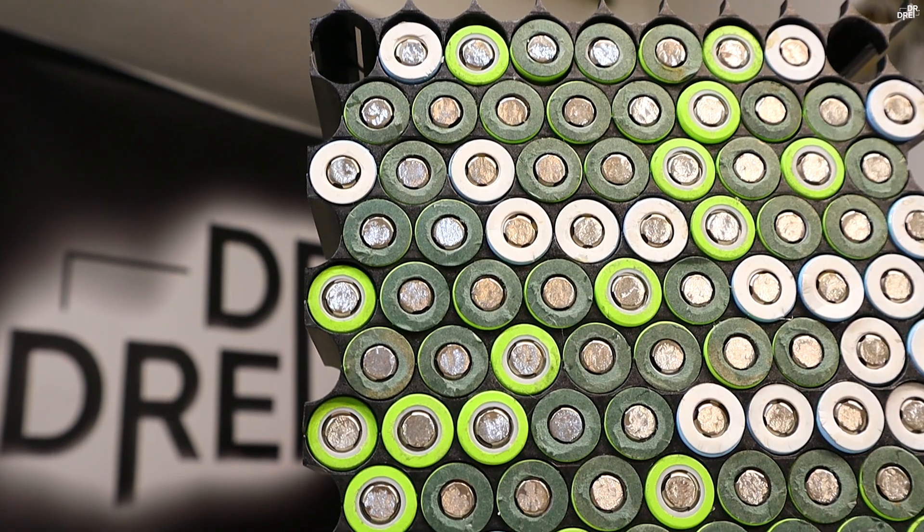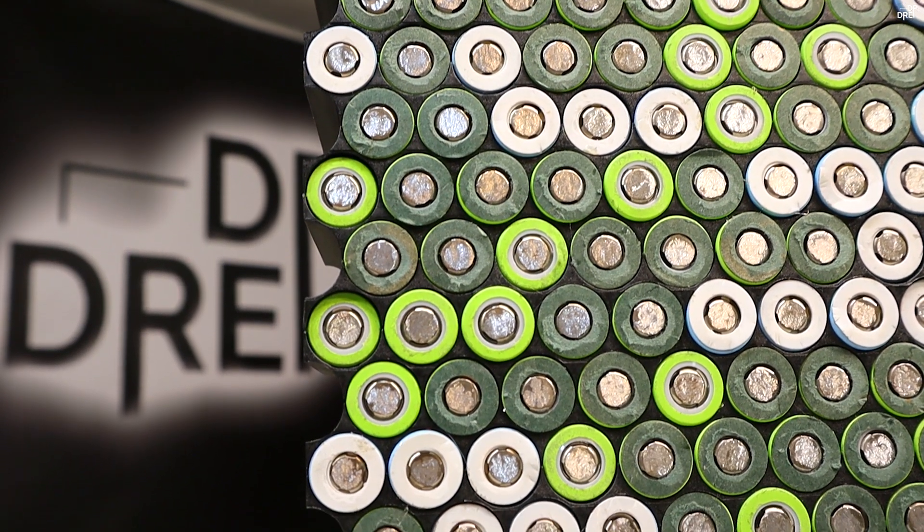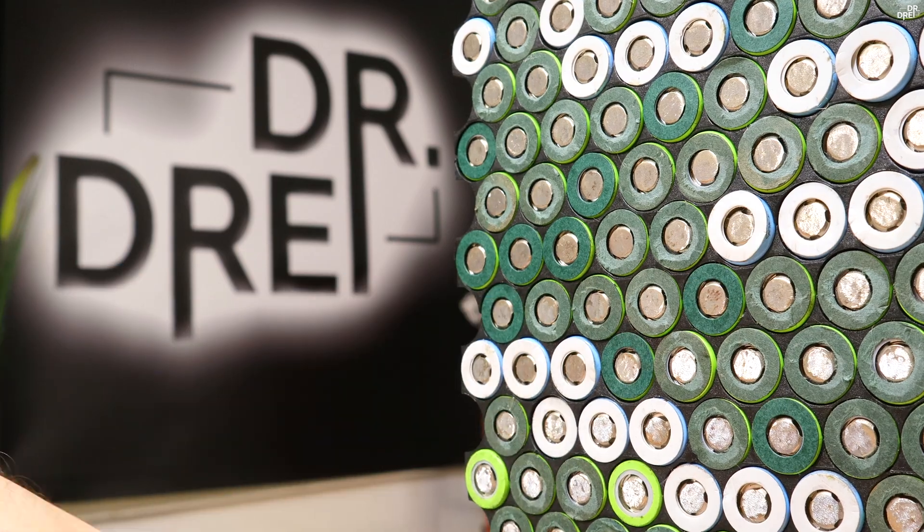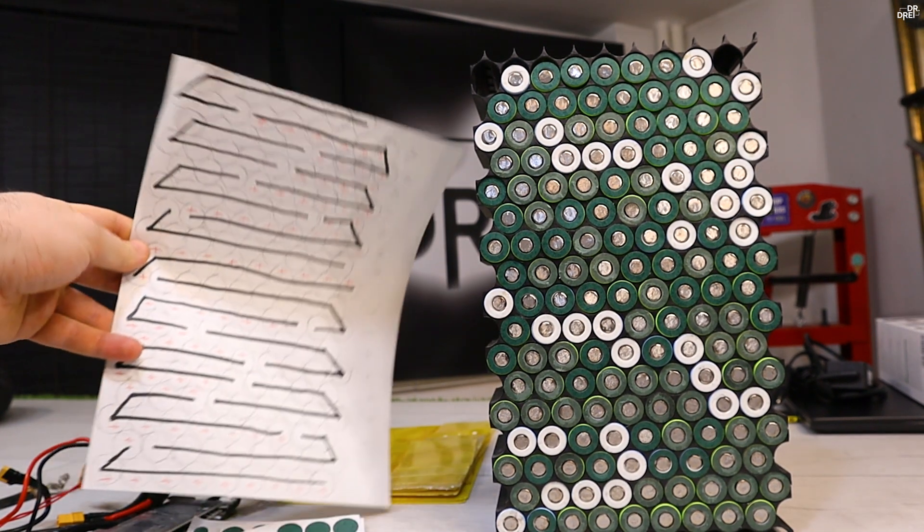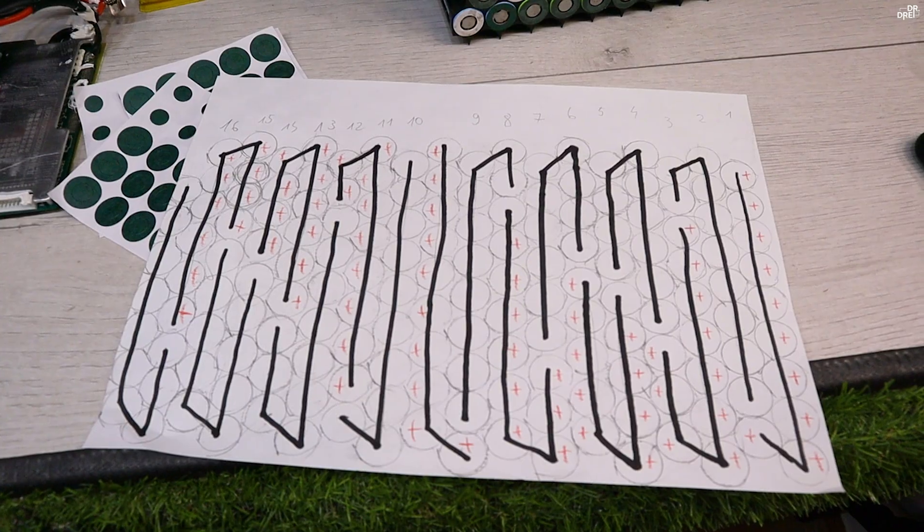But once we're done with that we can move on to replacing some of the insulation paper on the positive side of the cells. And then take a look at my plan which was 16S and 10P. However, things took a turn and you'll see next what is about to happen.